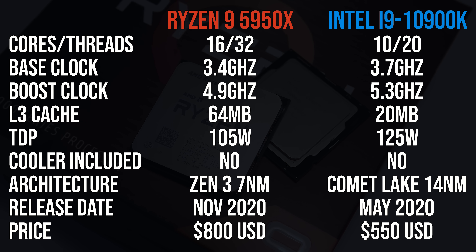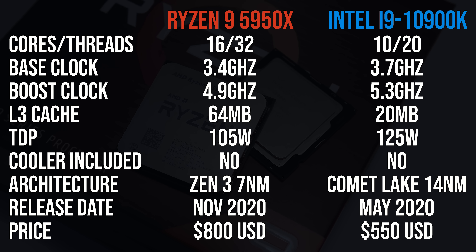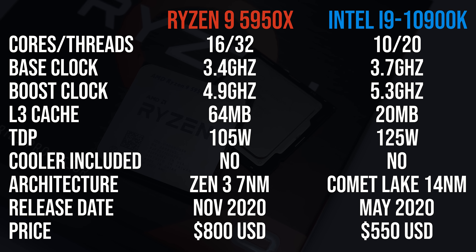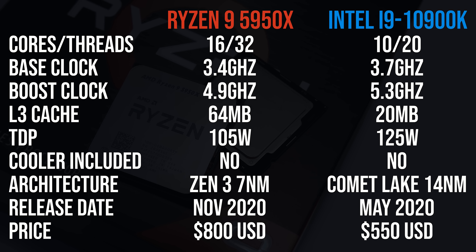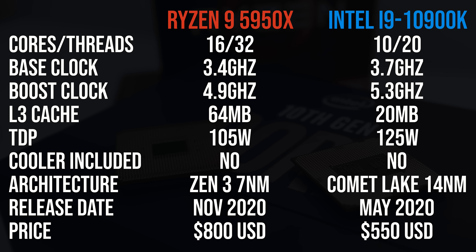Starting with the specs, the 5950X is a 16 core 32 thread part, while the 10900K has 10 cores and 20 threads, so based purely on this we're expecting AMD to win multicore tests. The 10900K can reach higher clock speeds, but Zen 3 has more cache.